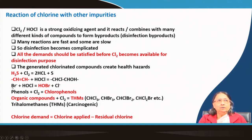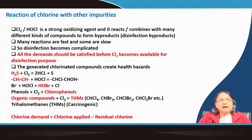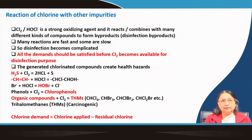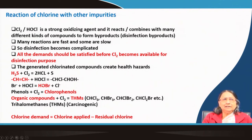Bromide may also be present in water, for example in seawater. When you disinfect water containing bromide with chlorine, hypobromous acid (HOBr) is formed. HOBr is also a good disinfecting agent, but it contains bromine. In many countries, bromine-based disinfectants are used — for example, HOBr is used in swimming pools — but we are not very confident about its safety.